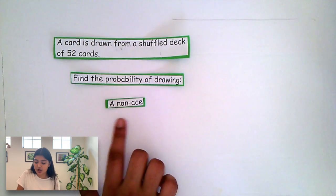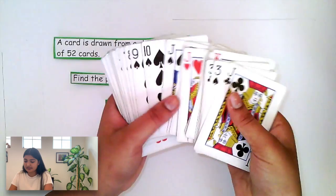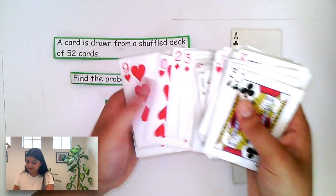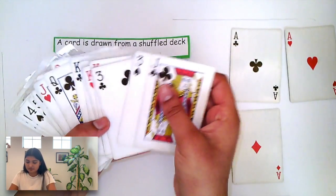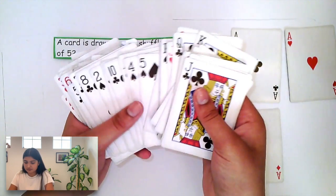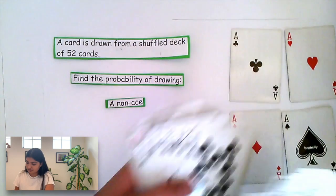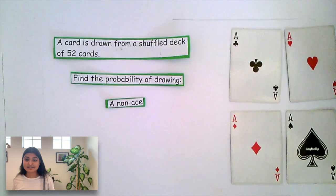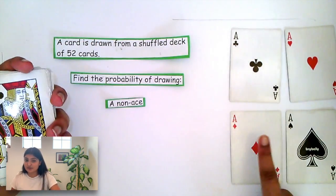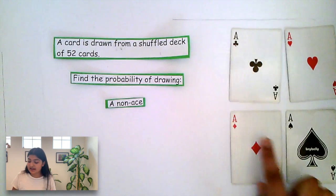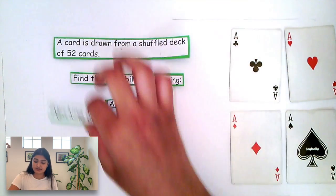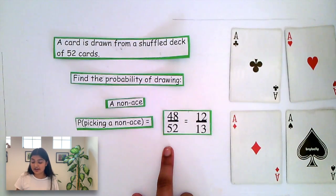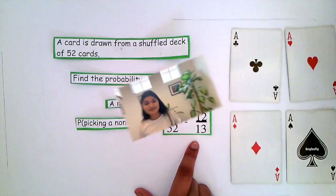Finally, what's the probability of drawing a non-ace? In our deck, we can see that there are 4 aces, one for each suit. As we have to draw a non-ace, the number of favorable chances would be any card from this deck of 52 that excludes these 4 cards. 52 total cards minus 4 aces is equal to 48 favorable chances. So we know that the probability of picking a non-ace is 48 over 52, which can be simplified to 12 over 13.